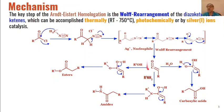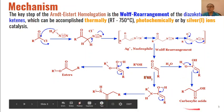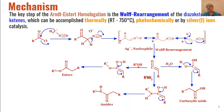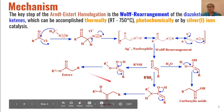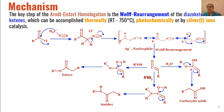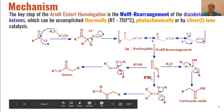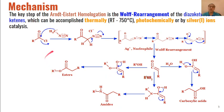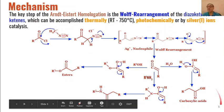Ketenes are formed as intermediates of Wolff rearrangement. These ketenes will then react with different nucleophiles. If we react ketenes with water, we will get carboxylic acids as the product. Similarly, if we use alcohols as the nucleophile, the ketenes will react with alcohols and we will get esters as the product. If we use amines as the nucleophile, we will get amides as the product, through the respective intermediate stages undergoing keto-enol tautomerism.